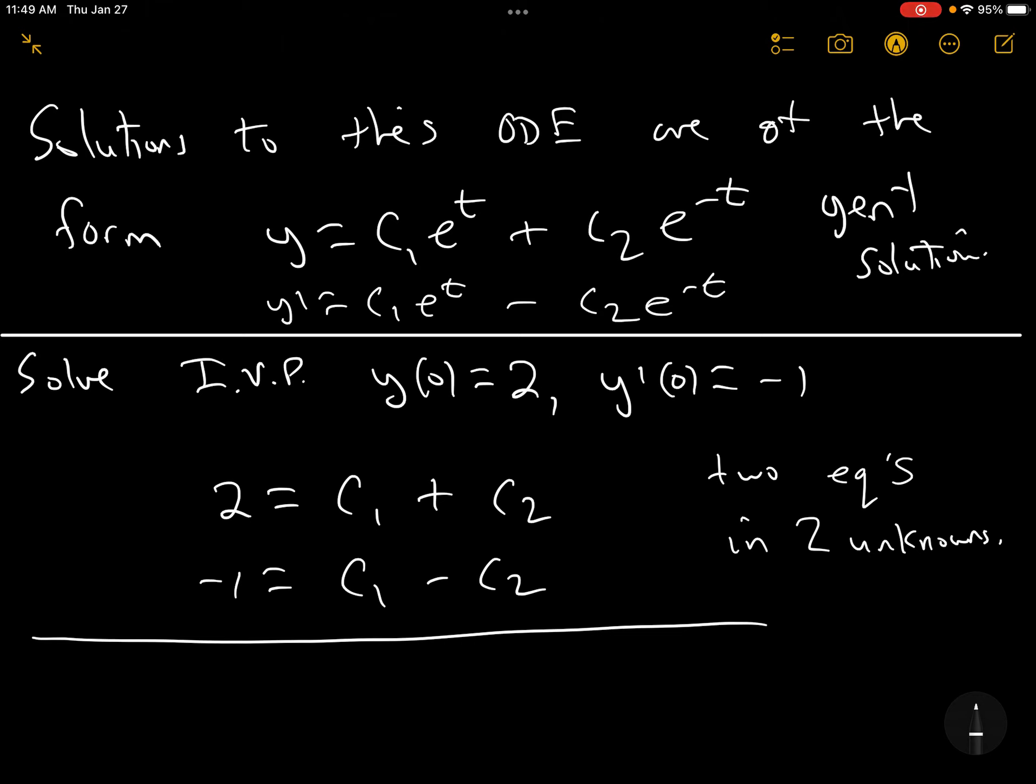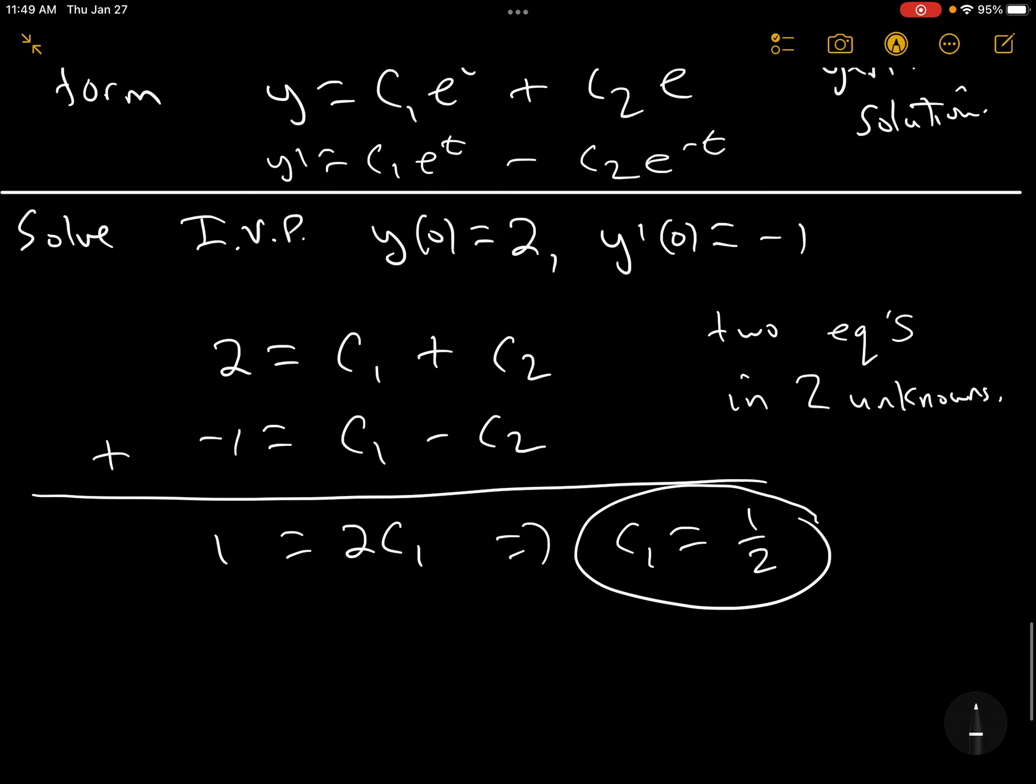So now we have a system of two equations and two unknowns. And you have to do some algebra work here. This one's really well set up. Just add the two together. You get one equals 2C1. Which implies C1 equals a half. And then you can plug that into either of these to find C2. And C2 turns out to be three halves. So the final solution turns out to be Y equals one half e to the t plus three halves e to the minus t. And that's the particular solution.